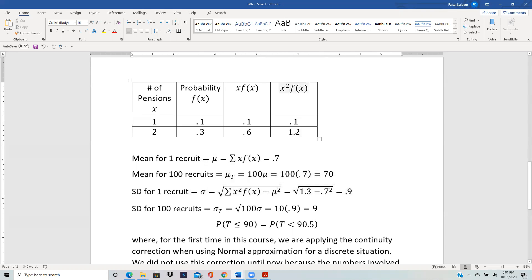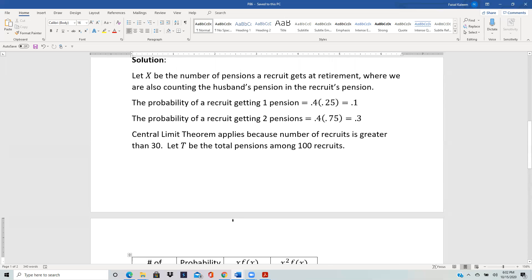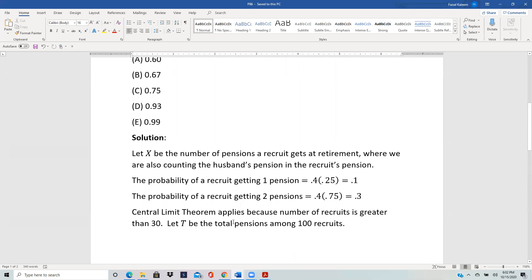We calculate the x²·f(x) also by squaring the x value and then multiplying it with f(x), and we do this in order to calculate standard deviation later. So mean for 100 recruits will be 100 times mean of each recruit, so that's 70. And standard deviation of one recruit is the square root of the variance, and variance is summation x²·f(x) minus the mean squared. This column sums up to 1.3, and the mean we already have is 0.7, so that's 0.9. So standard deviation for 100 recruits will be the square root of 100 times standard deviation of each recruit, so that would be 9.